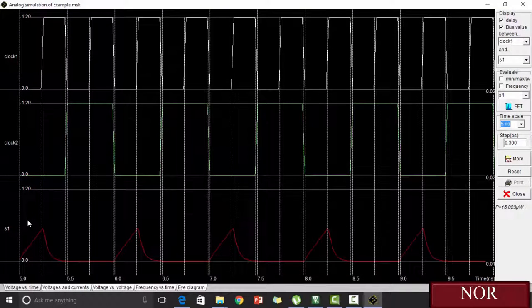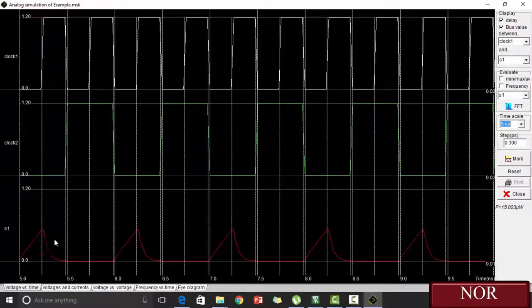We can see for the values 0, 0, we are getting output as 1 and for the rest of the values, we are getting output 0. So the NOR is justified.